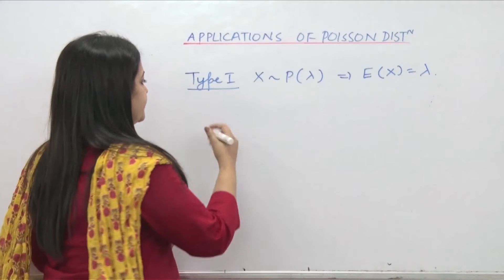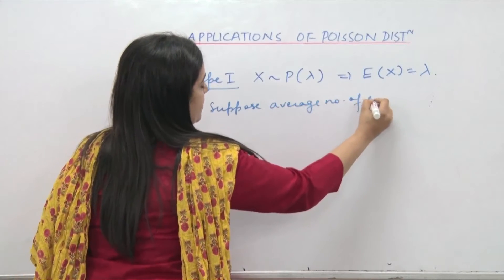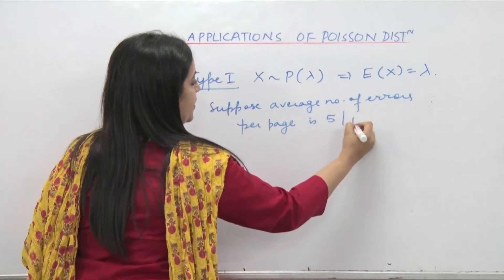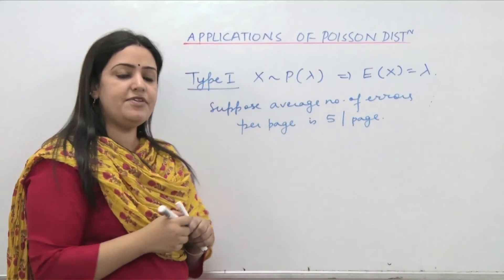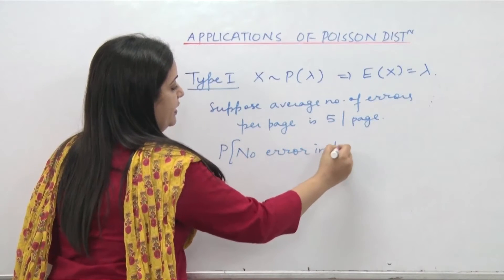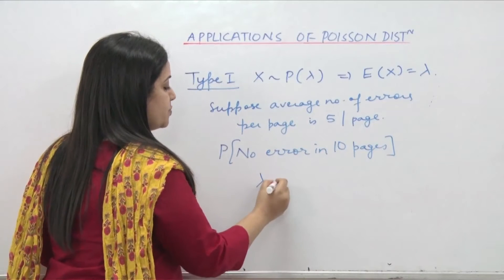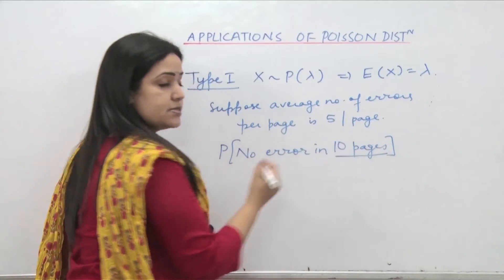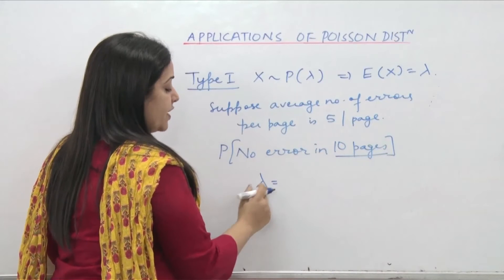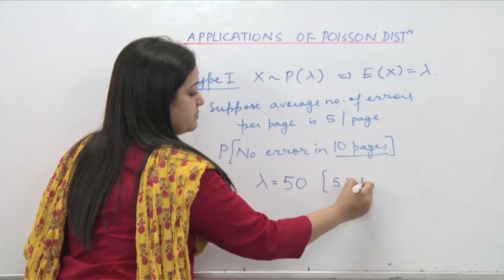Let us take an example. Suppose average number of errors per page in a particular book is 5 per page. And we are interested in finding probability of, say for example, no error in 10 pages. So what we basically do here is lambda is taken to be the average number in 10 pages. If average is 5 per page, then in 10 pages the average number of errors that we expect is 50, which is basically 5 per page multiplied by the number of pages.